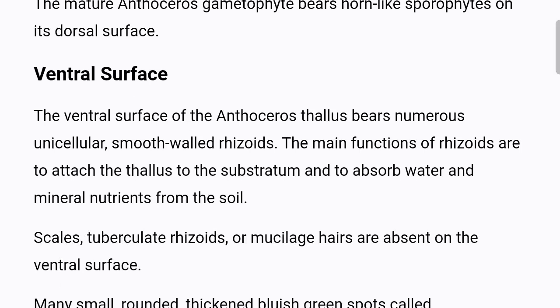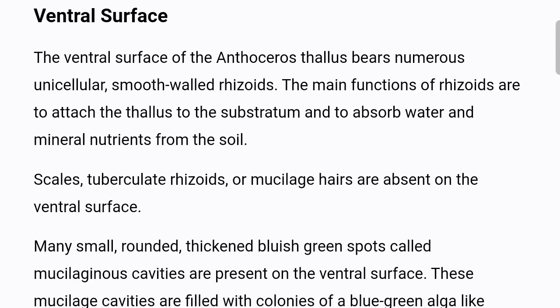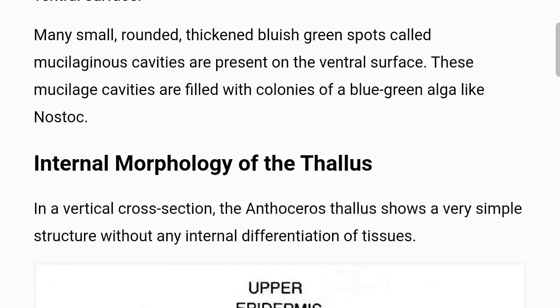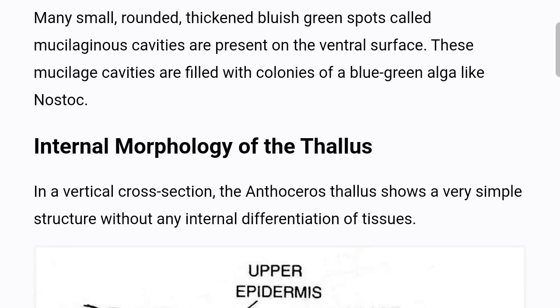The ventral surface of the Anthoceros thallus bears numerous unicellular, smooth-walled rhizoids. The main functions of rhizoids are to attach the thallus to the substratum and to absorb water and mineral nutrients from the soil. Scales, tuberculate rhizoids, or mucilage hairs are absent on the ventral surface. Many small, rounded, thick and bluish-green spots called mucilaginous cavities are present on the ventral surface, filled with colonies of a blue-green alga like Nostoc.